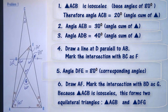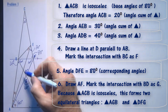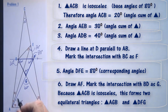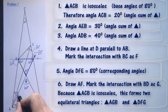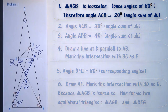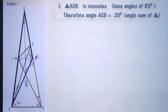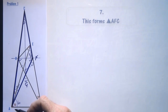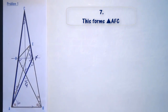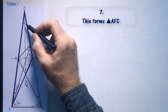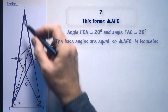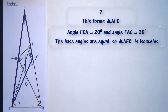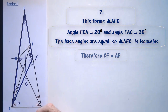Now, because I know where I'm going with this problem, I'm going to highlight these three equal sides. Note also that this angle here will be 10 degrees. Look now at triangle AFC: the angle FCA is 20 degrees and the angle FAC is also 20 degrees. We have a triangle with equal base angles — it's isosceles. Therefore CF equals AF.